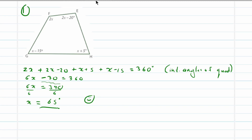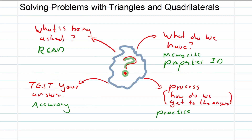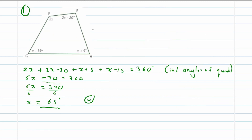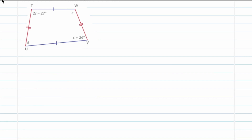Going through the process again: we read what is being asked — solve for x. What do we have — a quadrilateral, so we used its properties. We went through the process of calculation and checked that we did it accurately.